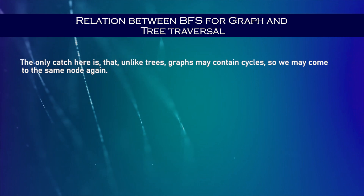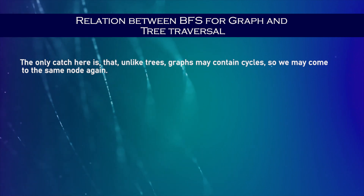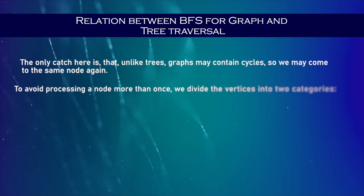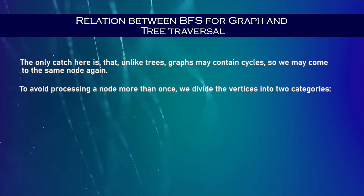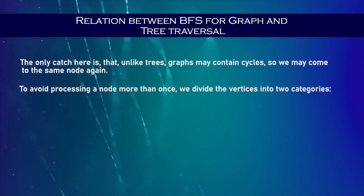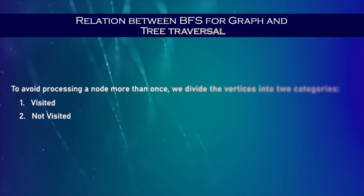Here is the relation between breadth-first search for graphs and tree traversal. Traversal or search for a graph is similar to the breadth-first search of a tree. The only catch is that unlike trees, graphs may contain cycles, so we may come to the same nodes again. To avoid processing a node more than once, we divide the vertices into two categories: visited and non-visited. A boolean visited array is used to mark the visited vertices. BFS uses a queue data structure for traversal.